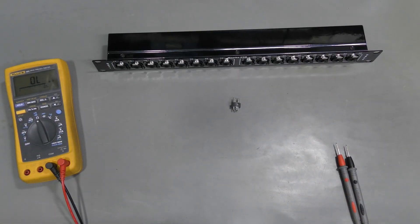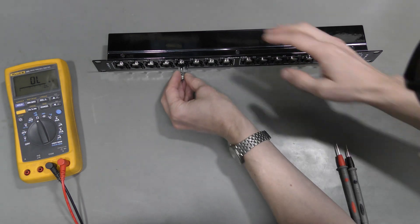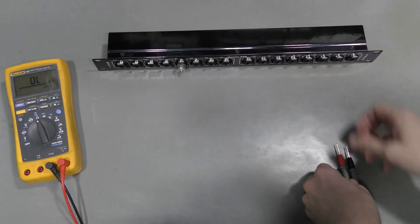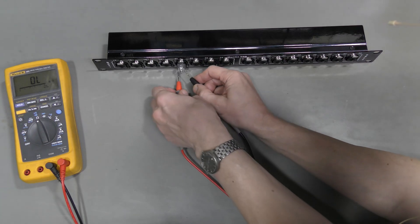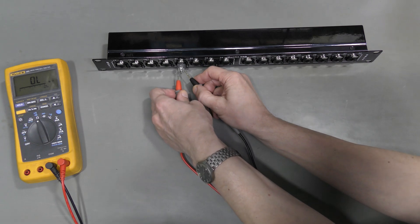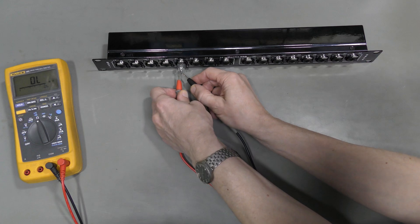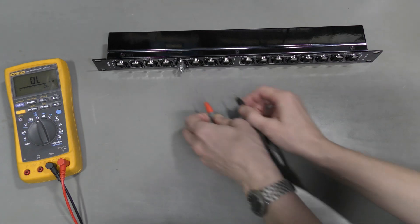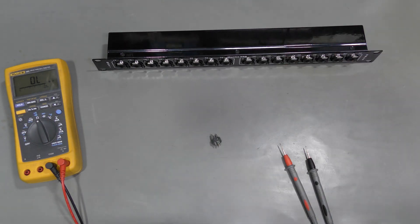So, now we have unmeasurable resistance between unconnected pins, of course. Let's check randomly, let's say this connector. Ground, one line, nothing. The other line, nothing. Between the lines, nothing. But, look at this. I have one more splitter box.